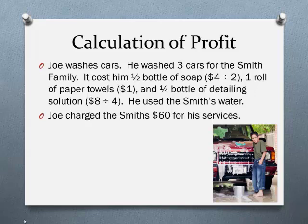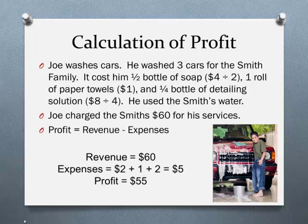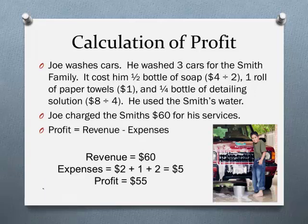For example, if it cost you $15 to make a product and you sell it for $20, you make $5 profit. This general calculation doesn't take into consideration taxes. Consider the car wash example: he washed three cars for the Smith family using half a bottle of soap, one roll of paper towels, and a quarter bottle of detailing solution. He charged $60. His expenses were $2 for soap, $1 for paper towels, and $2 for detailing solution — so his profit is $55.